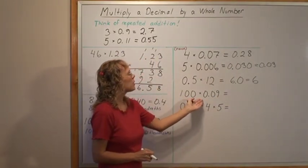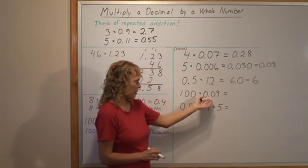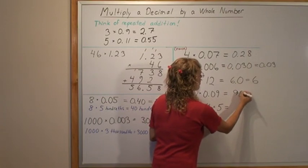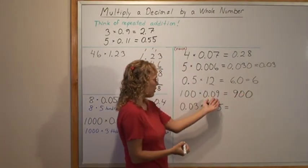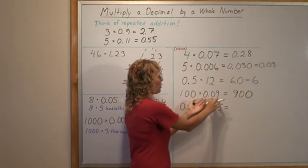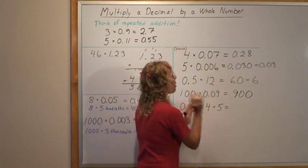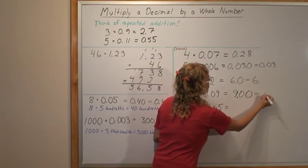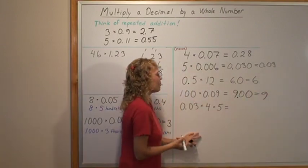And 100 times 9 hundredths. You go 100 times 9. It's 900. The answer has to have hundredths because if you were adding 100 copies of these you would still have hundredths.